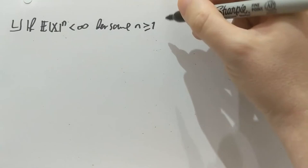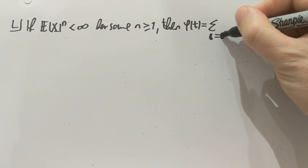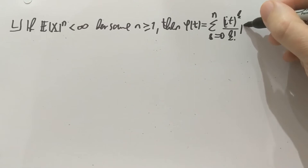In that case, the characteristic function of this random variable has the following finite Taylor expansion. I can take the sum up to n of it to the k over k factorial, which is not surprising, that's just the exponential function Taylor series or Taylor sequence, Taylor sum.